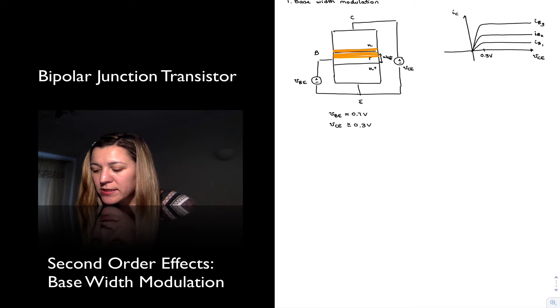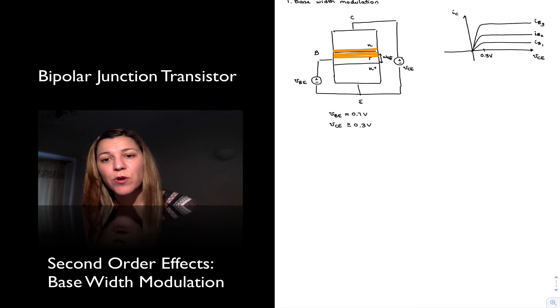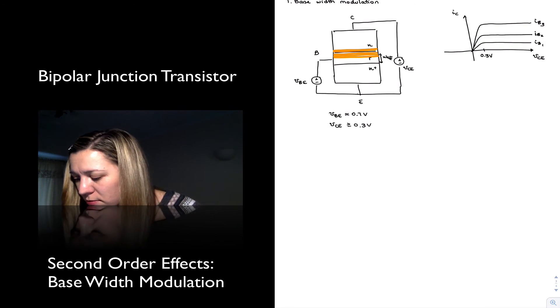Now what's happening here though is as VCE increases, as we just saw, now we have a smaller effective width of the base. And so we have less recombination going on at the base. If less electrons recombine at the base, that means those electrons that have not recombined are going into the collector. And so the collector current actually does increase slightly with increased values of VCE because there is less recombination at the base. And so if the recombination current is smaller, that means the collector current is slightly larger.